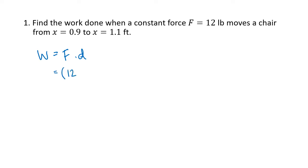So we've got 12 pounds multiplied by the distance that we move, which is 1.1 minus 0.9. So that's 12 pounds times 0.2 feet. We multiply those together, we get 2.4 foot-pounds. And so foot-pounds is one of the different units that we use for force when we're using the American pounds and feet. Foot-pounds is a common unit that you'll see.